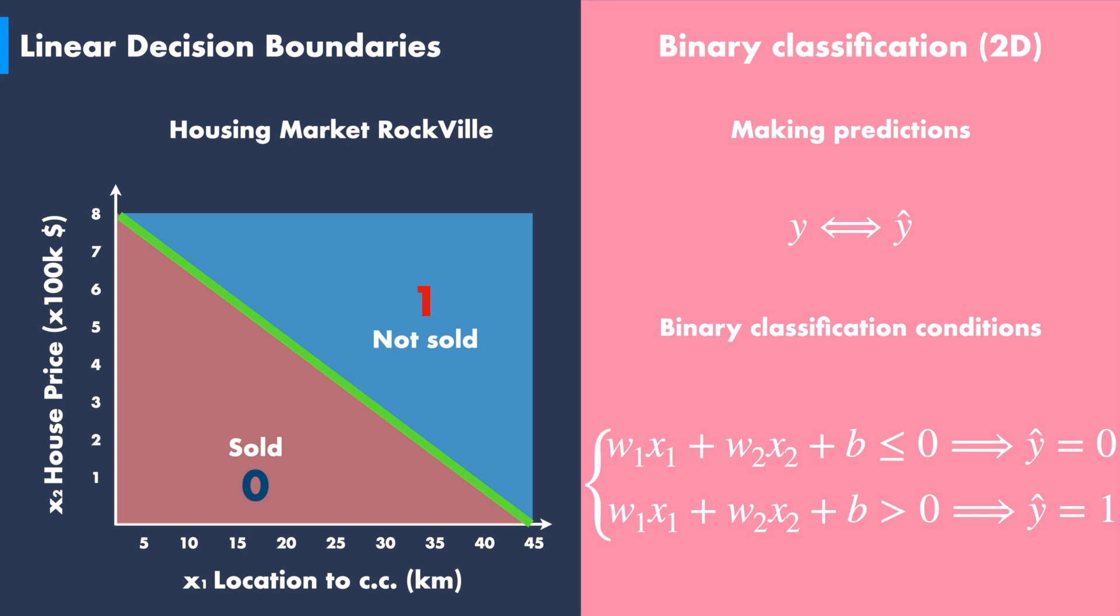At the same time, the condition w1x1 plus w2x2 plus b is strictly bigger than zero corresponds to houses not likely to be sold. This means the y hat prediction must have a value equal to one.